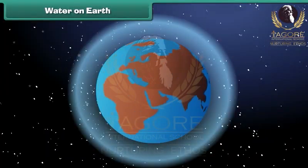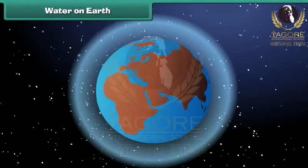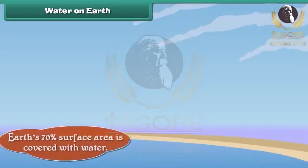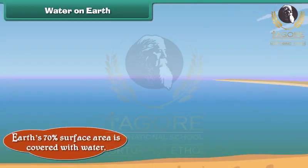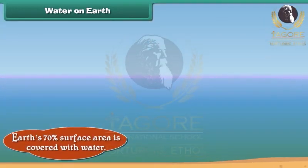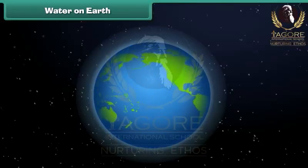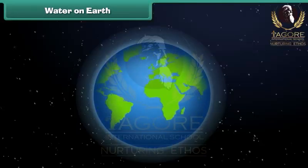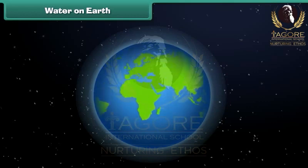Water is the most abundant substance present on the earth. In fact, our earth's 70% surface area is covered with water. Earth is also called the blue planet because when seen from space it appears blue due to water.